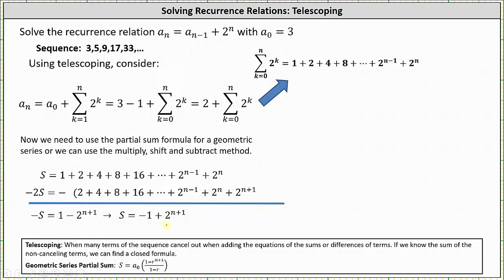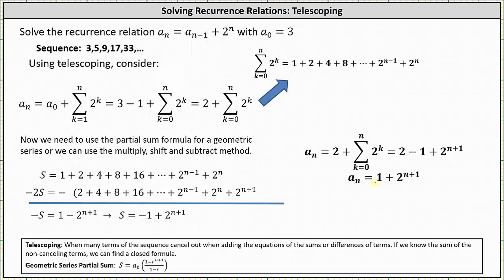Taking this closed formula for the sum and substituting it in for the sigma notation gives us a_n equals two minus one plus two to the power of n plus one, which simplifies to a_n equals one plus two to the power of n plus one. This is the same result we obtained using the partial sum formula for a geometric series. I hope you found this helpful.